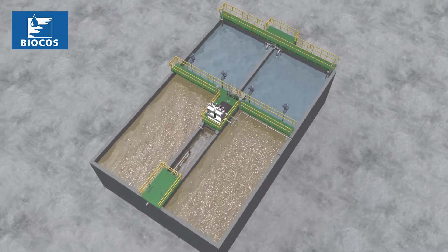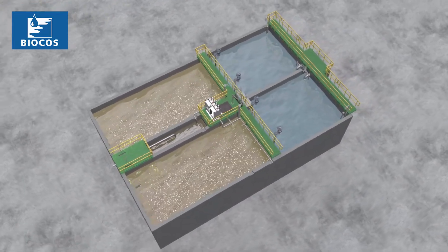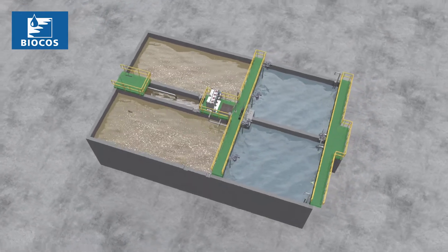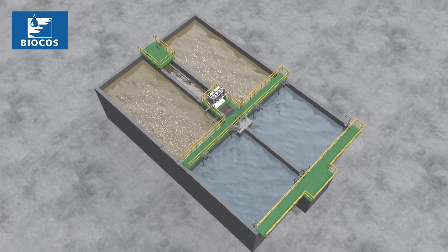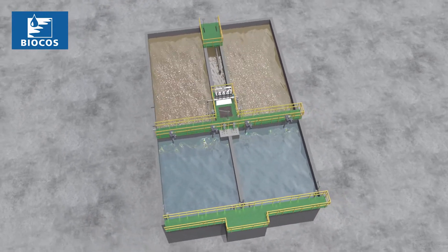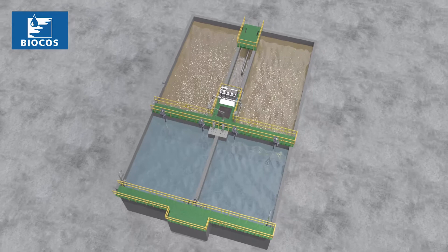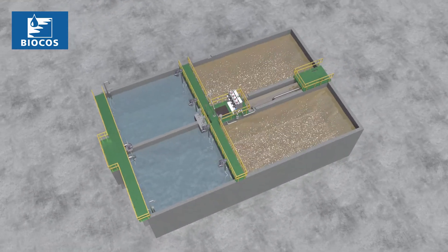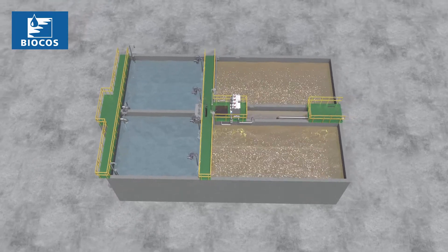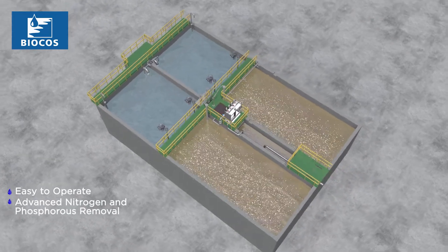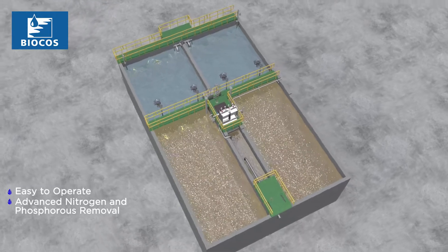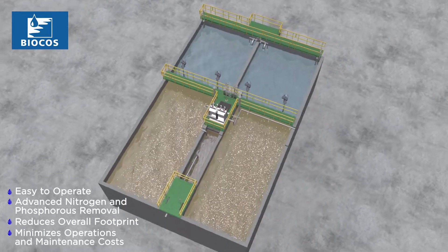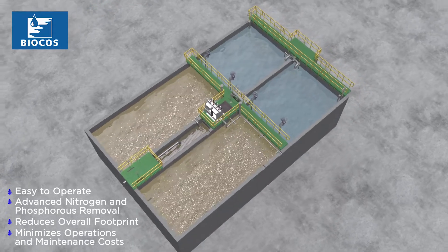The BioCoast process is an advanced activated sludge technology. This process is ideal for new systems or the upgrade of lagoon systems where nutrient limits are being required. All phases of the system are exclusively driven by pressurized air, allowing for simple operation and maintenance. It is easy to operate, allows for advanced nitrogen and phosphorus removal, reduces overall plant footprint, and minimizes operations and maintenance costs.